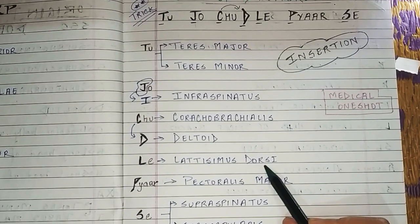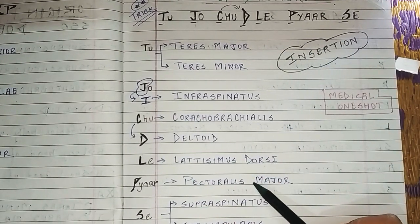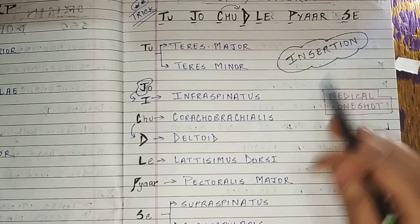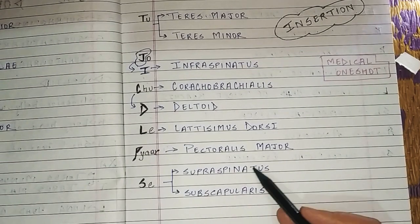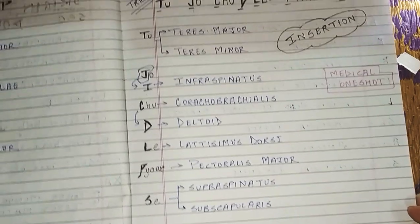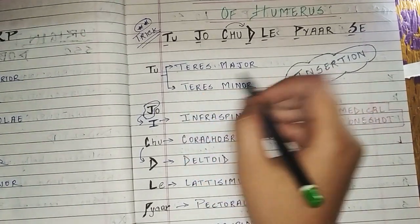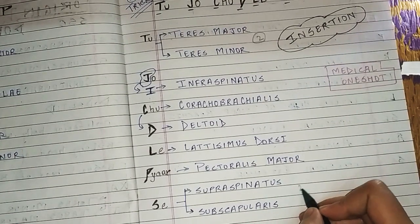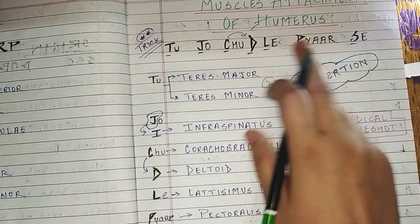Then L — Latissimus Dorsi muscle. Then pyaar (love), P — Pectoralis Major. Then S — Supraspinatus muscle and Subscapularis muscle. Note: at the start, T gives two muscles (Teres Major and Teres Minor), and S also gives two muscles (Supraspinatus and Subscapularis).